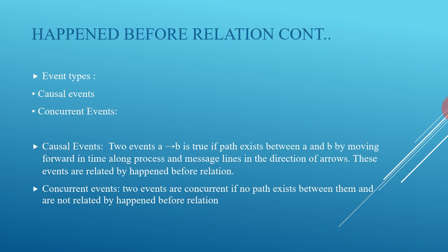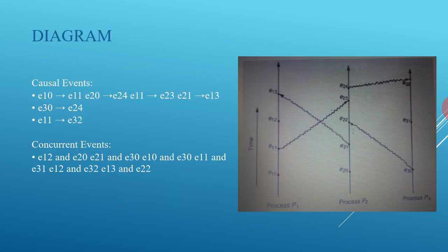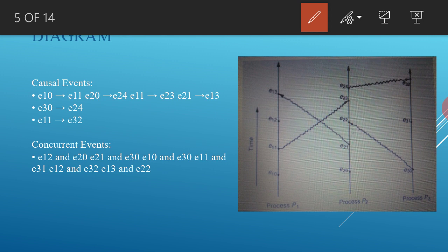There are two types of events: causal events and concurrent events. Causal events are those where a happened-before relation exists, and concurrent events are those where it does not exist. For example, e10 and e11 are causal events because e10 happened before e11, while e12 and e20 are concurrent events because there is no happened-before relationship between them.